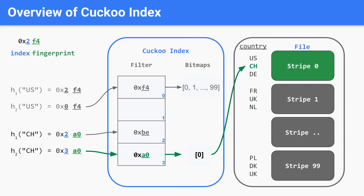For example, when querying for CH, we first check its primary bucket and find that A0 doesn't match the stored fingerprint BE, then check its secondary bucket and find a matching fingerprint. So we retrieve the corresponding bitmap, which determines that we only need to scan Stripe 0 in this case. Note that KUKU Index produces 100% correct mappings for positive lookups, in contrast to per-stripe bloom filters which can produce false positives.